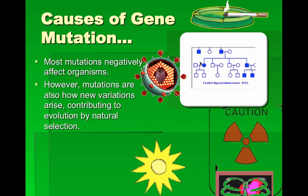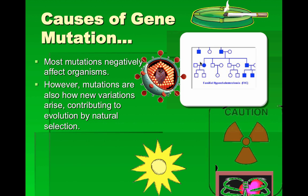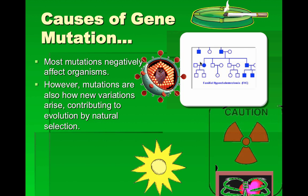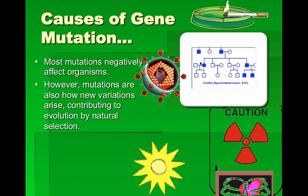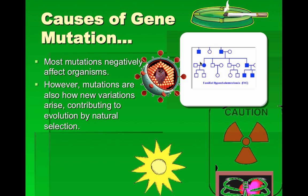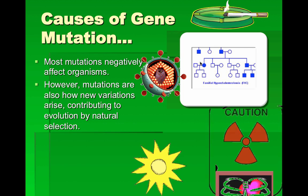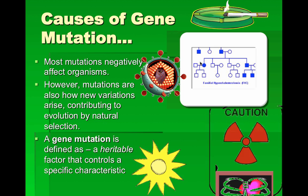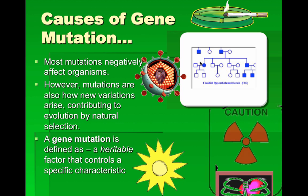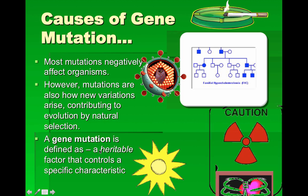An albino animal — basically losing all its pigmentation so it appears very pale and white — is caused by a mutation. If you suddenly lack pigmentation and lose your camouflage, standing out totally white in a forest is a disadvantage. But if you're in an environment where being white helps you blend in, such as near the poles or in an ash-covered area, that mutation can actually be an advantage.